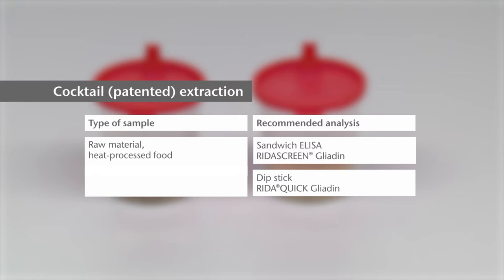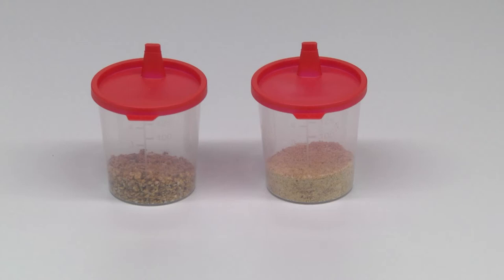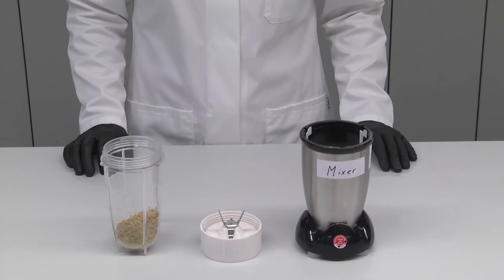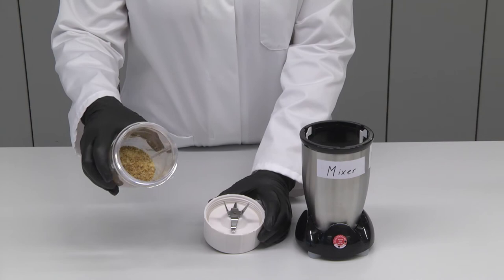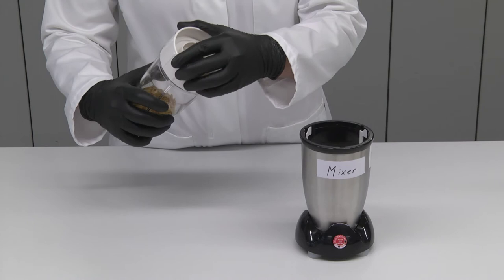Grind at least 5 grams of sample into powder. The sample should be as homogeneous as possible. For difficult samples, use more material for homogenization. Use a mixer to homogenize the sample.